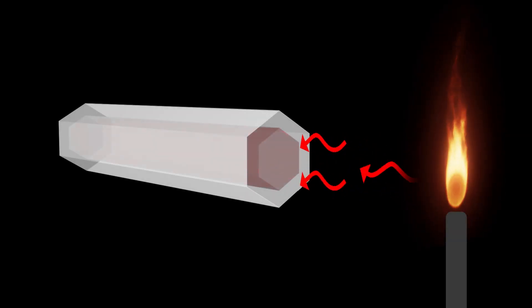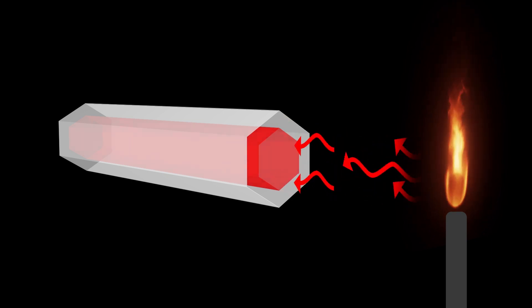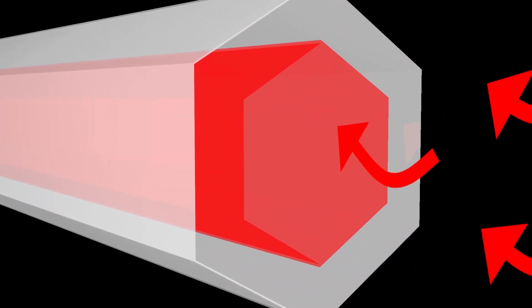Each thermionic module contains a hot core heated from the inside. The hot core is separated from a surrounding cold shell by a vacuum gap. The vacuum keeps the two shells insulated from each other and reduces unwanted heat loss in the system, similar to a vacuum-sealed thermos bottle.